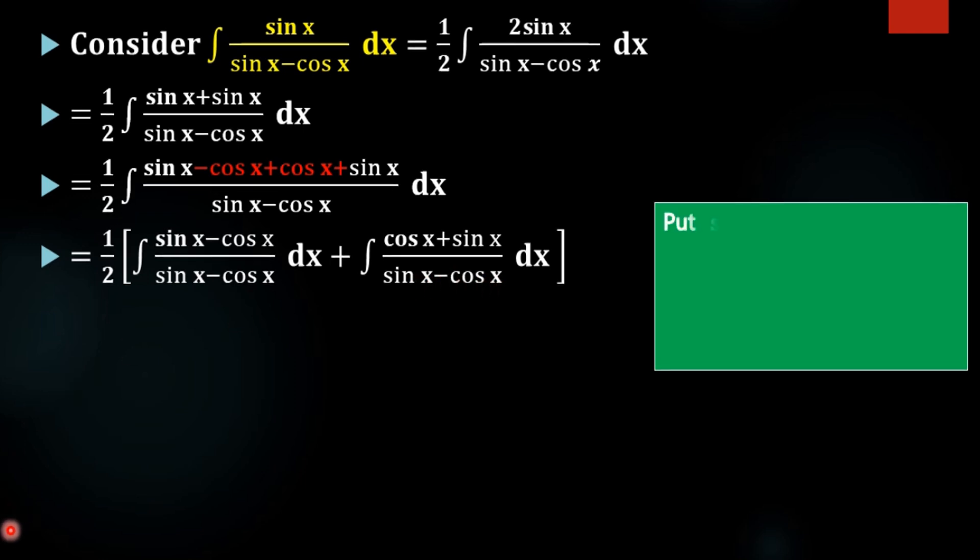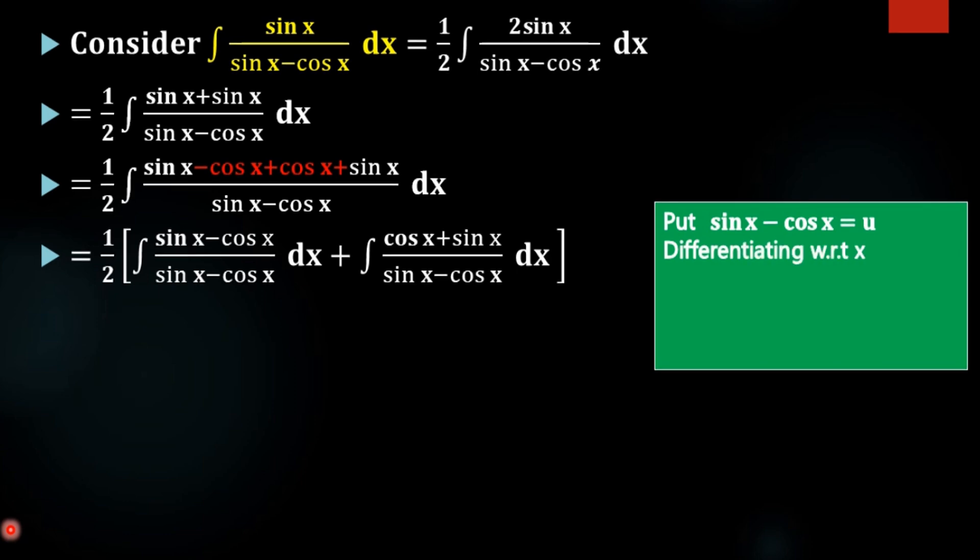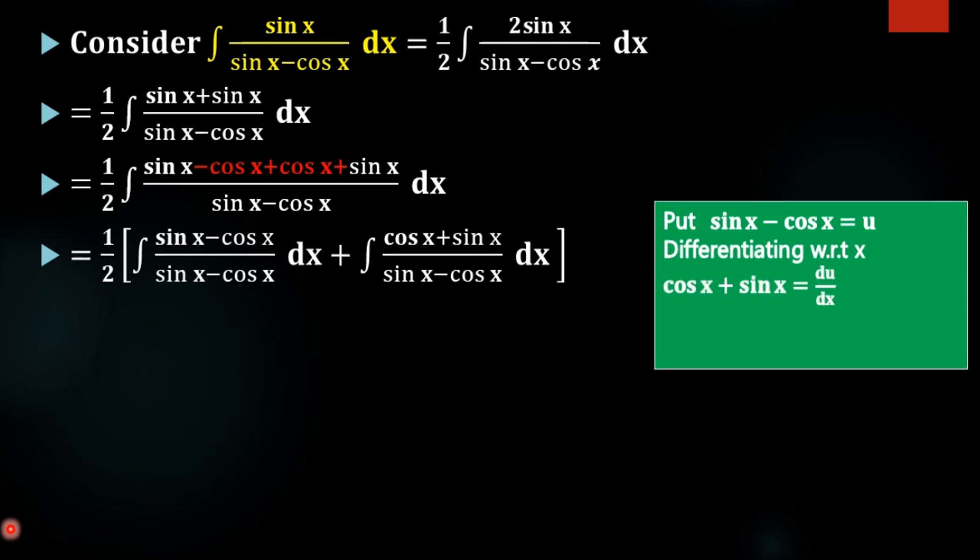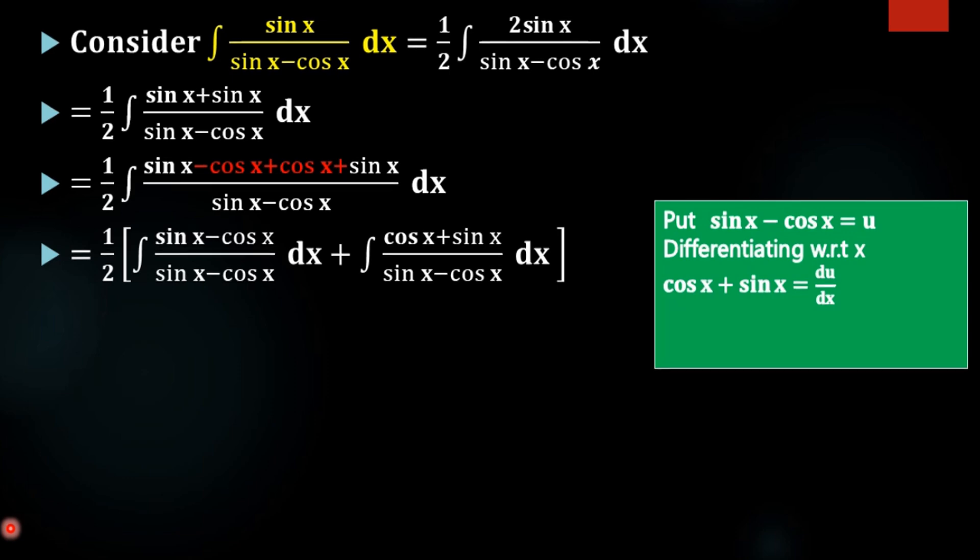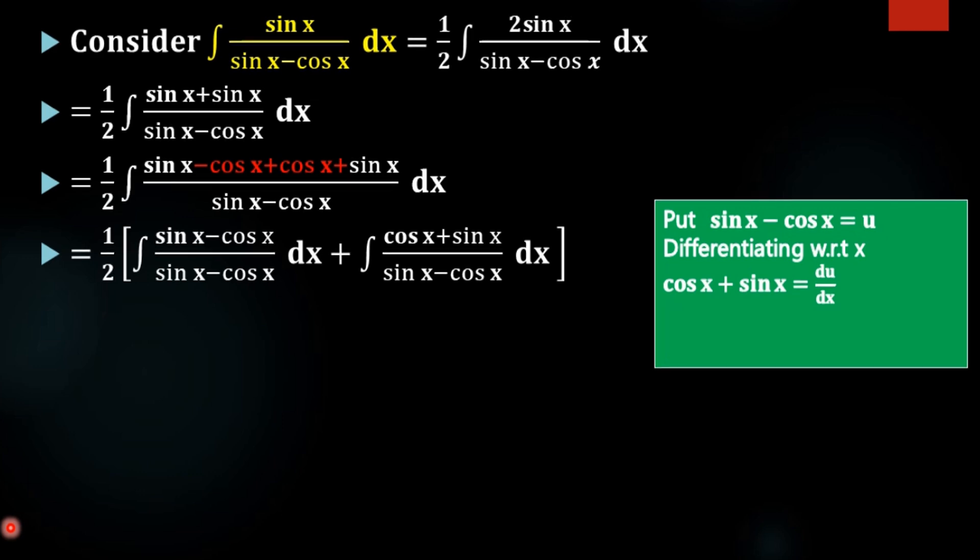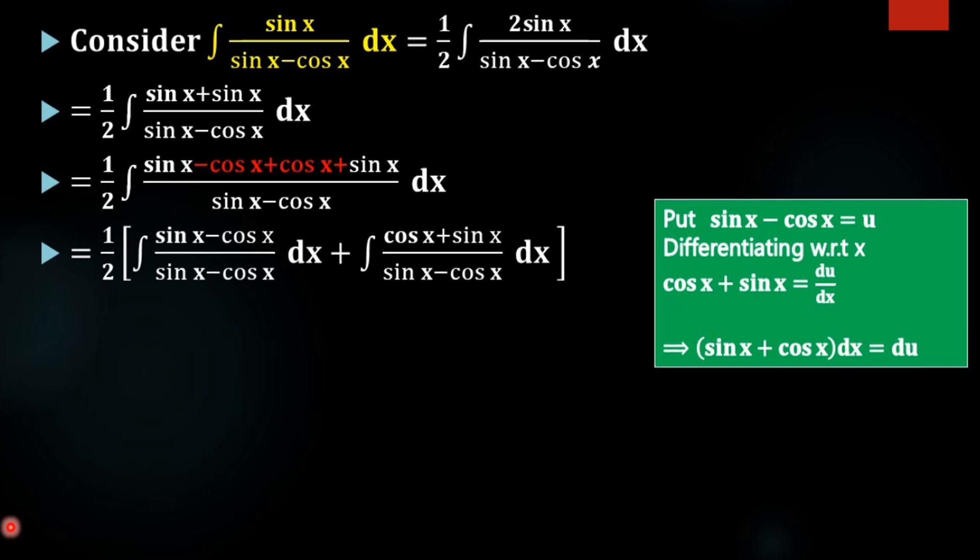We are taking sin x minus cos x equal to u. Then on differentiating with respect to x, we will get the derivative of sin x is cos x, derivative of cos x is minus sin x, minus of minus becomes plus, so cos x plus sin x equal to du by dx. Then sin x plus cos x dx equal to du.